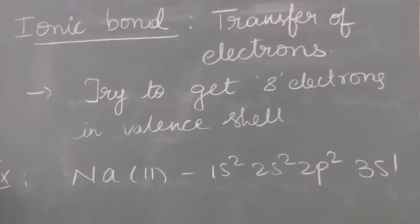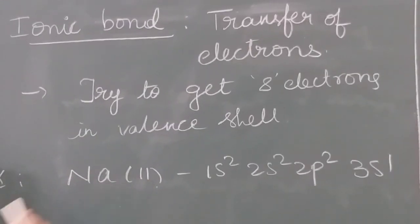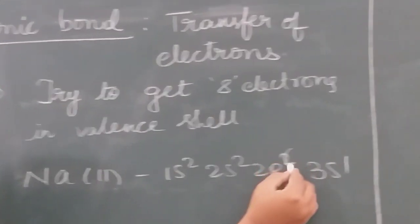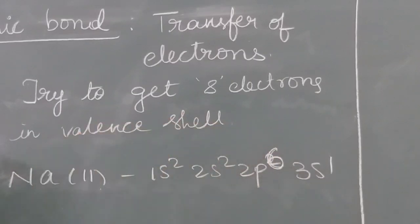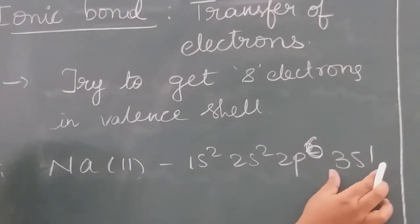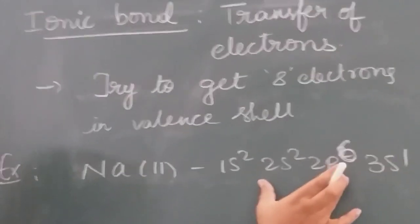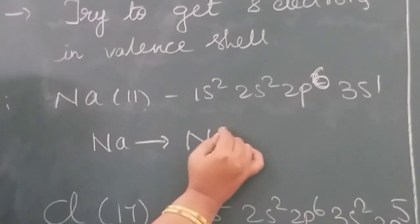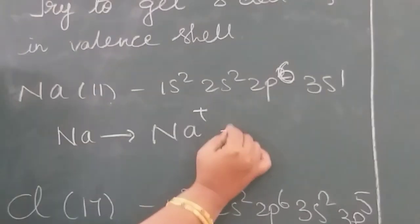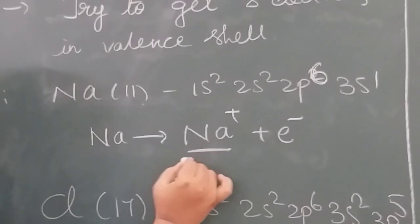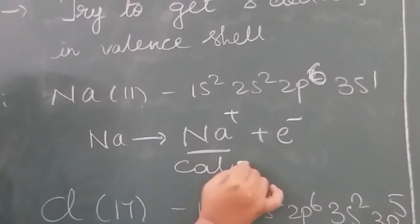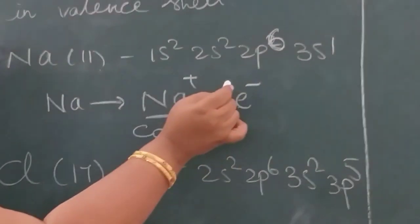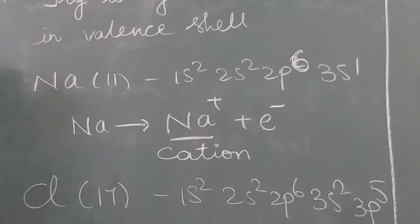For example, take sodium with atomic number 11. Electronic configuration: 1s2, 2s2, 2p6, 3s1. It has one extra electron. So sodium gives one electron and changes into a positively charged ion called a cation. The electron given by sodium will be taken by chlorine.